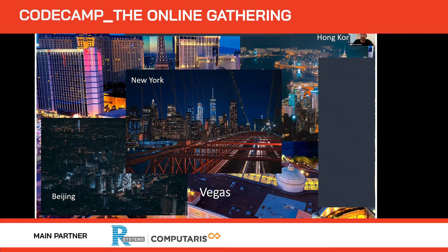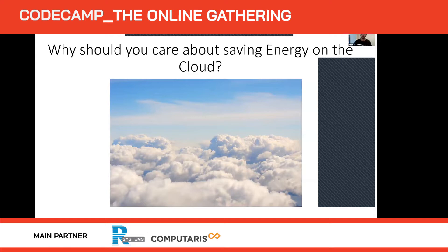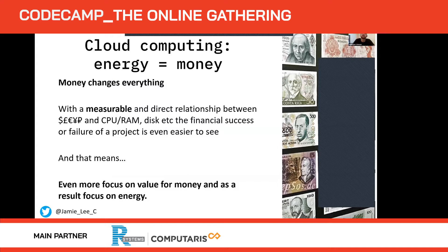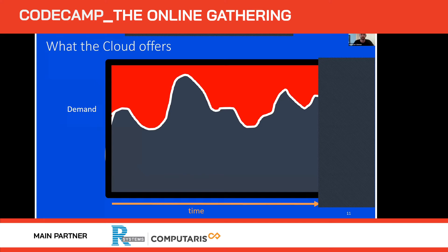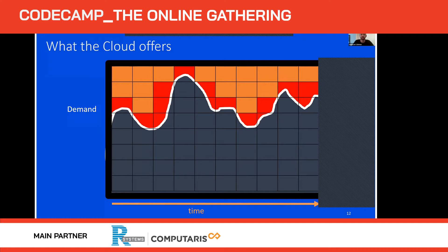Data centers — things we cannot see — are predicted to eventually consume one fifth of the global energy supply. Everyone talks about saving money on the cloud, but most people also care about energy and slowing global warming. Once a data center is set up, their main ongoing cost is energy. So if you can save money on the cloud, you're essentially saving energy. Moving to the cloud lets us free up resources, share them with others, and hopefully lower energy consumption.